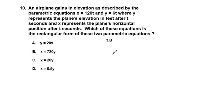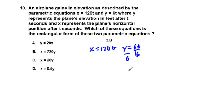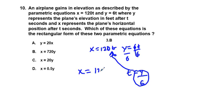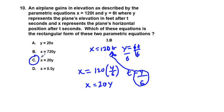Problem 10: An airplane has parametric equations x equals 120t and y equals 6t. Solving y for t gives t equals y over six. Substituting into the x equation: x equals 120 times y over six, and 120 divided by six is 20, so x equals 20y. The correct answer is C.